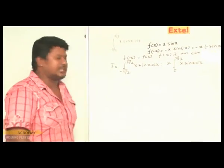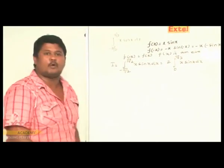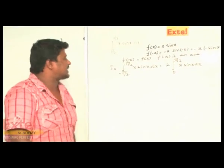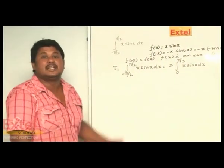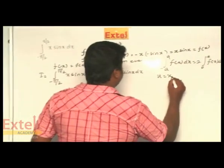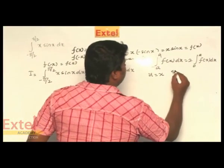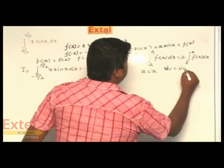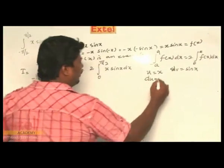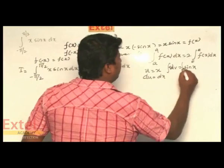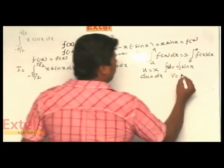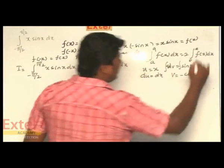Now I am going to integrate x sin x dx. This is done using the integration by parts method. Let us consider u equal to x and dv equal to sin x dx. Therefore, differentiating u gives du equal to dx, and integrating dv gives v equal to minus cos x, since the integration of sin x is minus cos x.